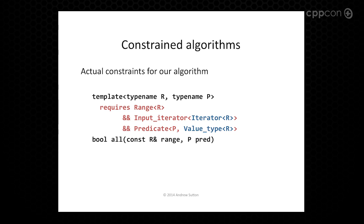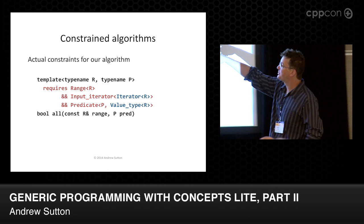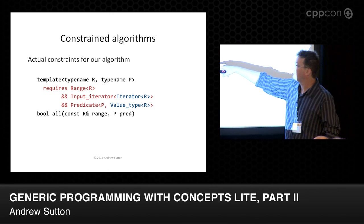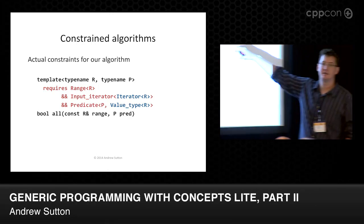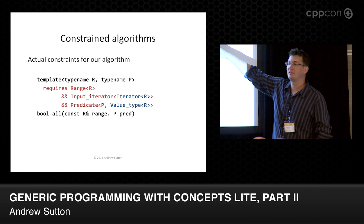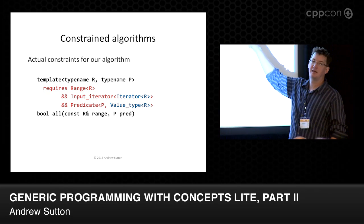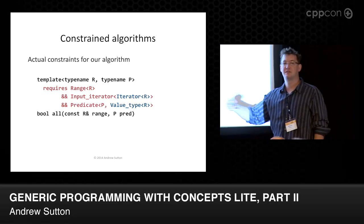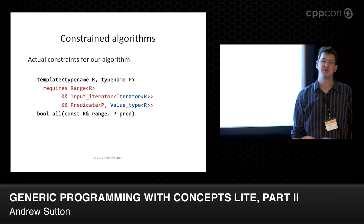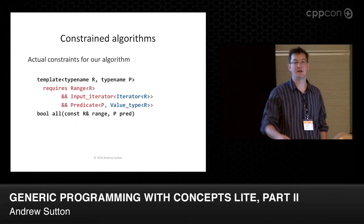So we can actually write these things like this — this is how we write it out. Requires range of R, input_iterator, and predicate. The things in blue are alias templates that provide access to some of the required operations. It's just notational — these are pretty easy to define. If you had a range-based for loop that assigns to every element, then it doesn't need to be readable — you have to write through, so it's a different requirement.